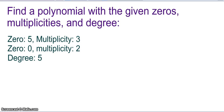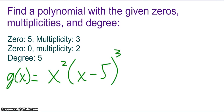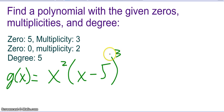Looking at another example, we want to find a polynomial with given zeros, multiplicities, and degree. Multiplicity is just how often a zero occurs. We're not going to multiply this out — leave it in factored form. A zero of 0 with a multiplicity of 2 gives me x squared, and a zero of 5 with a multiplicity of 3 gives me the quantity x minus 5 cubed. Together, 2 plus 3 gives a total degree of 5 for the polynomial.